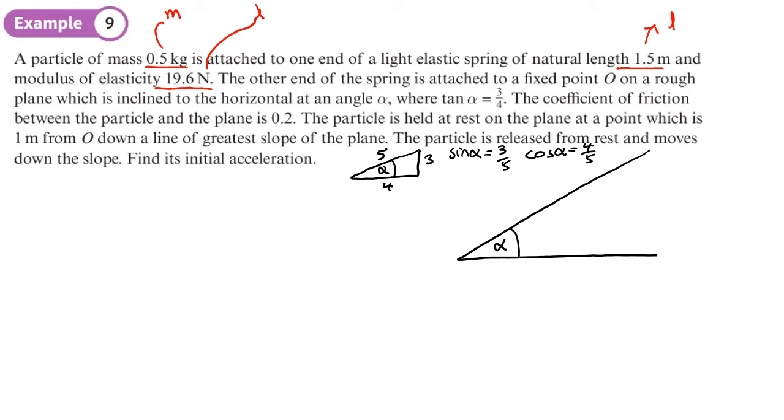And coefficient of friction between the particle and the plane is 0.2. The particle is held at rest on the plane at a point which is 1 metre from 0 down the line of the greatest slope of the plane. The particle is released from rest and moves down the slope. Find its initial acceleration. So let's finish this drawing off here. So you've got a spring held at some point at the top.